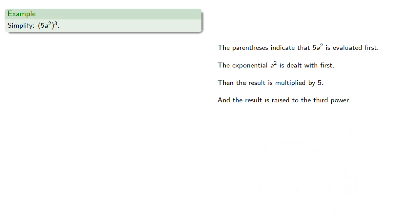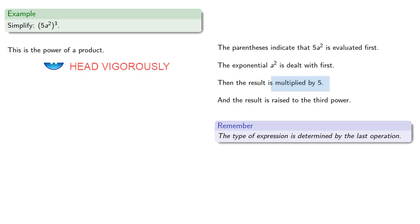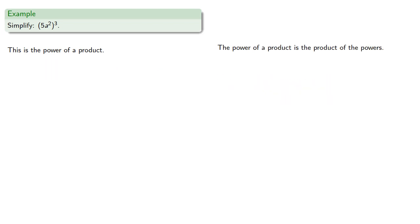Remember, the type of expression is determined by the last operation. This is a power, and note that what it's the power of is a product. Our rules say that the power of a product is the product of the powers. So both factors are raised to the third power. That's five to the third times a to the second, the whole thing, raised to the third.